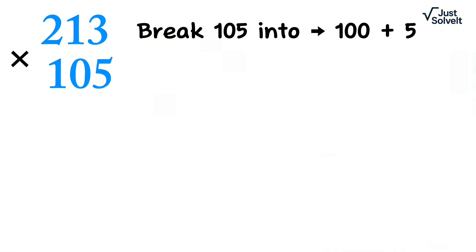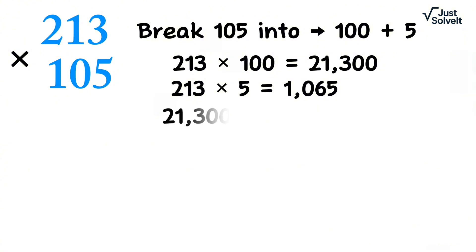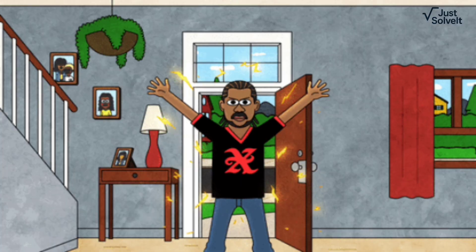Got it? 213 times 100 equals 21,300. 213 times 5 equals 1,065. 21,300 plus 1,065 equals 22,365. Comment below how fast you got it. And if you beat 5 seconds, you're officially a math ninja.